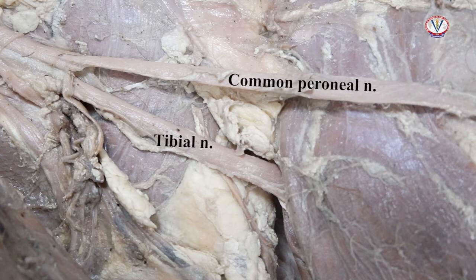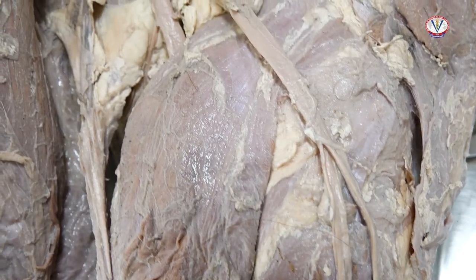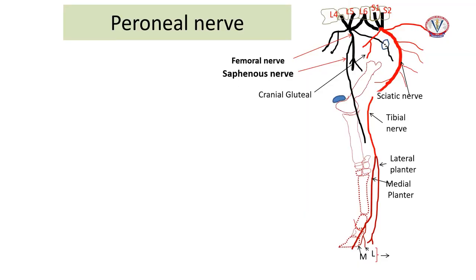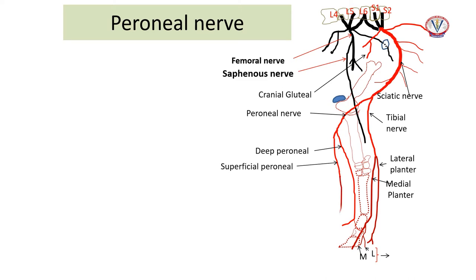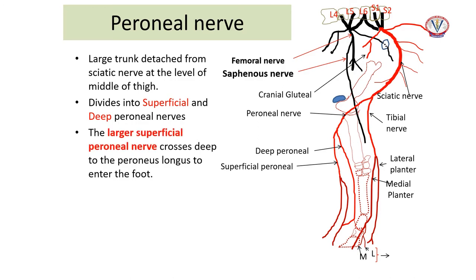The common peroneal nerve is detached as a large trunk from the sciatic nerve at the level of the middle of the thigh and innervates the muscles on the craniolateral aspect of the crus. At the level of the proximal fibula it divides into superficial and deep peroneal nerves. In the proximal leg, the deep peroneal nerve divides into medial and lateral branches and gives muscular branches to the craniolateral muscles of the leg: peroneus tertius, long digital extensor, cranial tibial, and peroneus longus muscles.